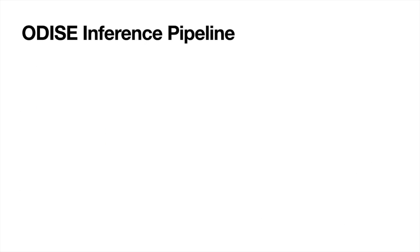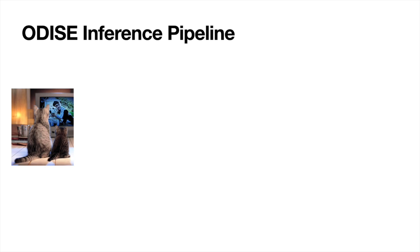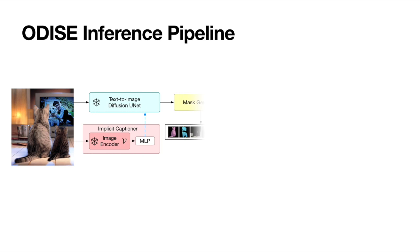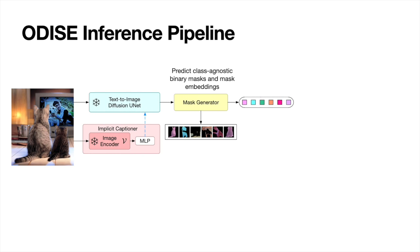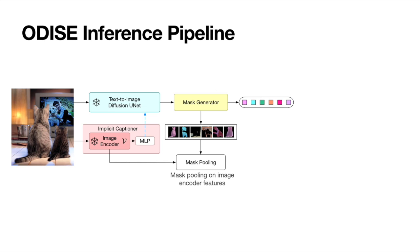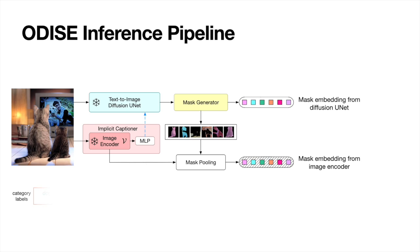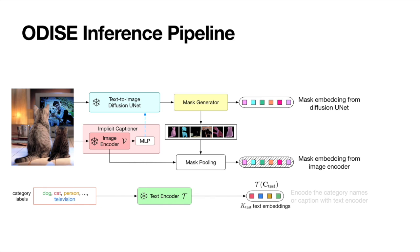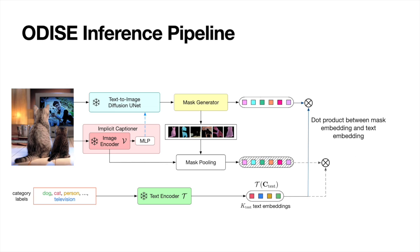To perform inference with Odyssey, we input the image into the text-to-image diffusion unit and the implicit captioner to extract its internal representation. The mask generator predicts class-agnostic binary masks and their mask embeddings based on the diffusion features. We further perform mask pooling on the image encoder features to extract another set of mask embeddings. Given the testing category labels, we encode them with the text encoder to extract their text embeddings, then perform a dot product between the mask embeddings and the text embeddings. We take the geometric mean of two predictions to get the final open vocabulary panoptic segmentation results.